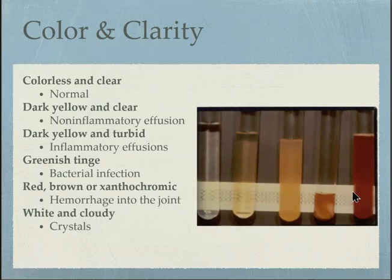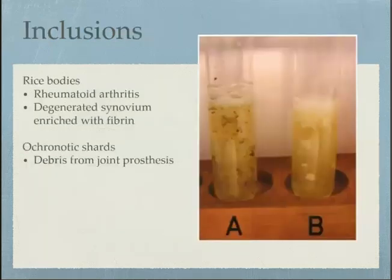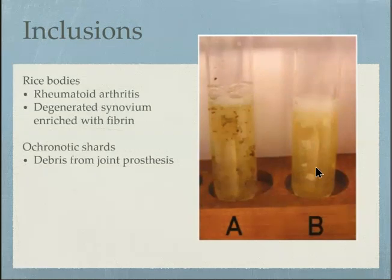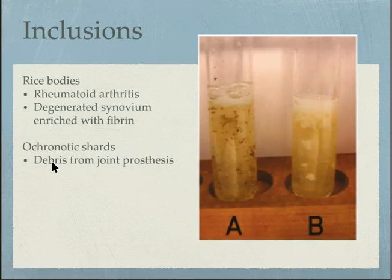Sometimes joint fluid contains inclusion bodies. The most common ones associated with disease include rice bodies, seen in rheumatoid arthritis, and ochronotic shards — fragments of worn prosthesis that accumulate over time.